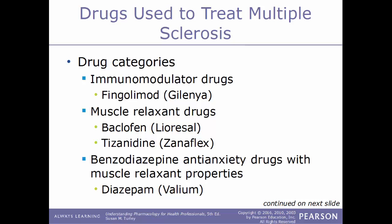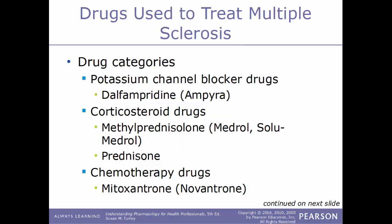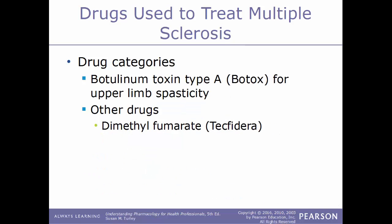Other drug categories for MS include a benzodiazepine anti-anxiety drug with muscle relaxant properties such as diazepam (Valium); a potassium channel blocker dalfampridine (Ampyra); corticosteroids such as prednisone or methylprednisolone (Medrol/Solu-Medrol); a chemotherapy drug mitoxantrone (Novantrone); botulinum toxin type A (Botox) for upper limb spasticity; and dimethyl fumarate (Tecfidera).